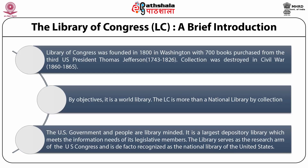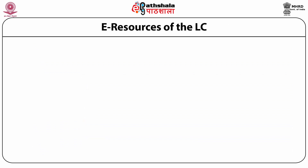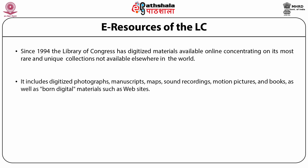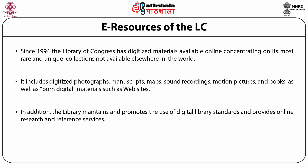The library serves as a research arm of the U.S. Congress and is de facto recognized as the National Library of the United States. Since 1994, the Library of Congress has digitized materials available online, concentrated on its most rare and unique collections not available elsewhere in the world. It includes digitized photographs, manuscripts, maps, sound recordings, motion pictures and books, as well as modern digital materials such as websites. In addition, the library maintains and promotes the use of digital library standards and provides online research and reference services.